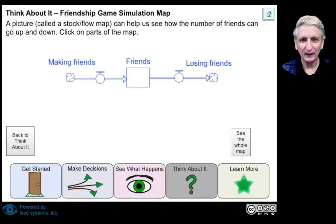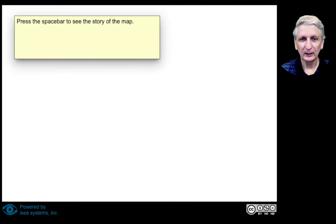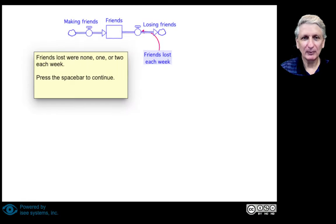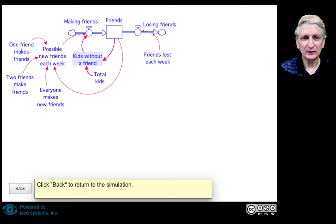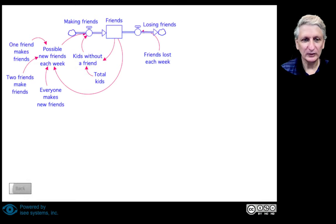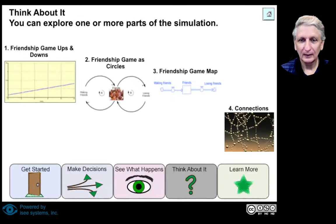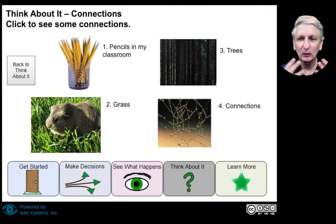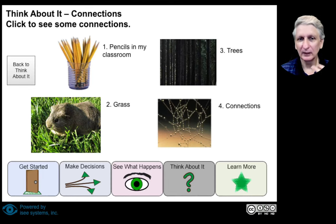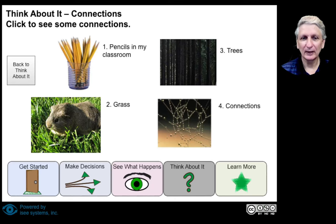We can then look at them in terms of our stock flow diagrams and how the overall stock flow diagram can be built up by looking at all the various interacting factors that we've considered in our story. The story doesn't need to be perfect, but it needs to be able to help us tell a story. There are other stories we could tell — like the number of pencils in a classroom and why they keep disappearing, the number of trees outside, the grass. And these are done with young children.